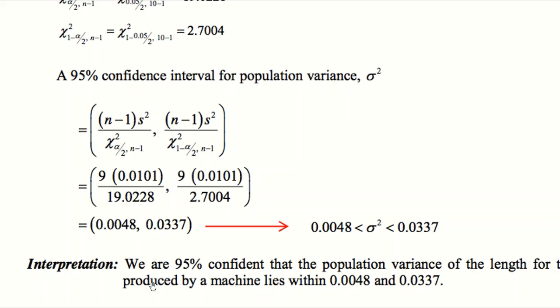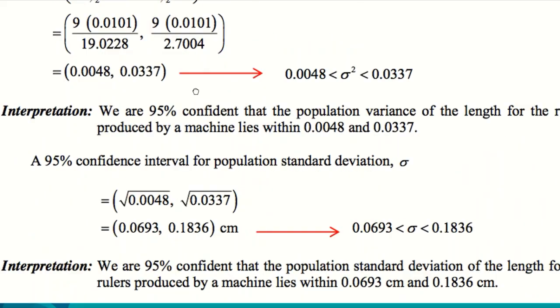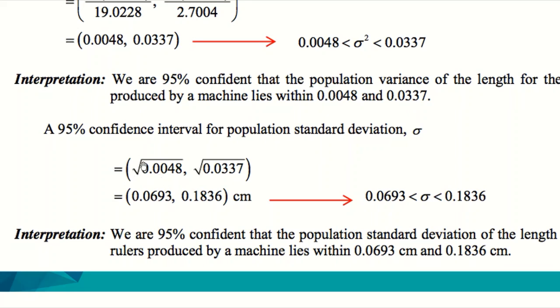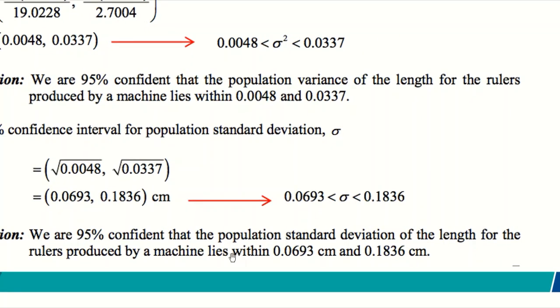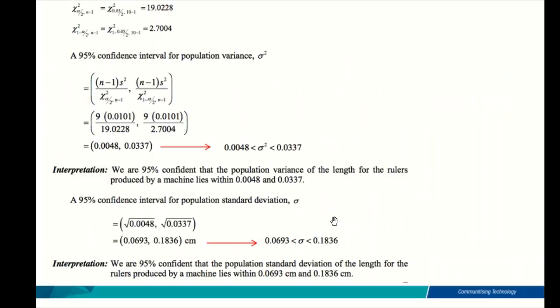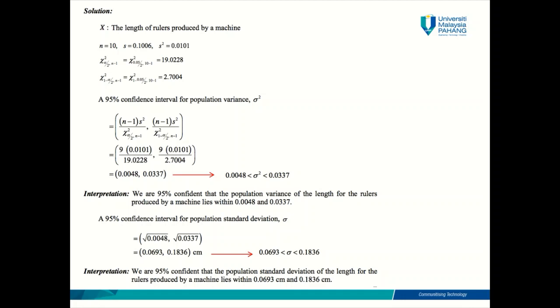So this is the confidence interval that you can use to estimate sigma-square. So your interpretation would be we are 95% confident that the population variance of the length for the rulers produced by a machine lies within 0.0048 and 0.0337. One question. Should there be any units at this confidence interval? This is confidence interval for sigma-square, which is variance. Is there any units for variance? No, there is no unit for variance. So you should not write any units here. Okay. So this is the confidence interval for sigma-square. How to find confidence interval for sigma? So you just simply need to add on square root onto your upper limit and your lower limit from the above answer and you can immediately get your estimation for sigma here. 0.0693, 0.1836 centimeter. Okay. Because standard deviation has units. So you need to write the unit here.